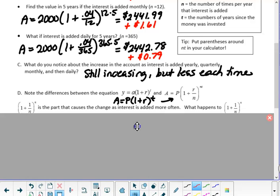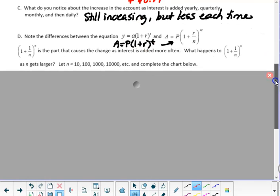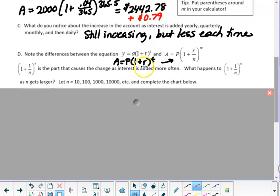And it's a very interesting result. So here's what we're going to do to explore that. We notice that the difference between our original equation, which just had 1 plus r to the t power, is 1 plus r over n to the nt. And the difference is this 1 plus 1 over n to the n power. That's the part that's kind of different here.